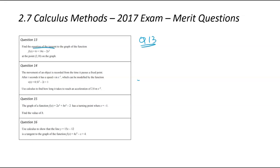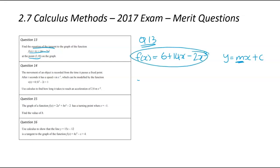Find the equation of the tangent for this graph at the point (2, 18). We've got a lot of information, but the first and most important one is that original function, which is 6 plus 14x minus 2x cubed. We are interested in the tangent, and the equation of the tangent is y equals mx plus c, where m stands for the gradient. So we're going to differentiate our original function to find the gradient function, and then calculate m.